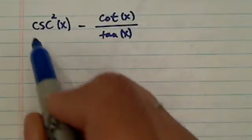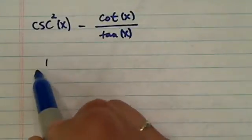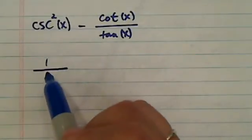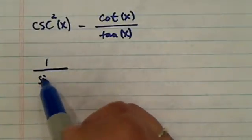OK, to simplify this trig expression here, first we recognize that CSC cosecant is really 1 over sine.